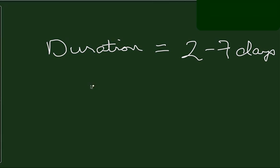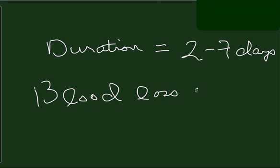Normal blood loss during a menstrual period averages about 35 cc's, but the normal range is 10 to 80 cc's.